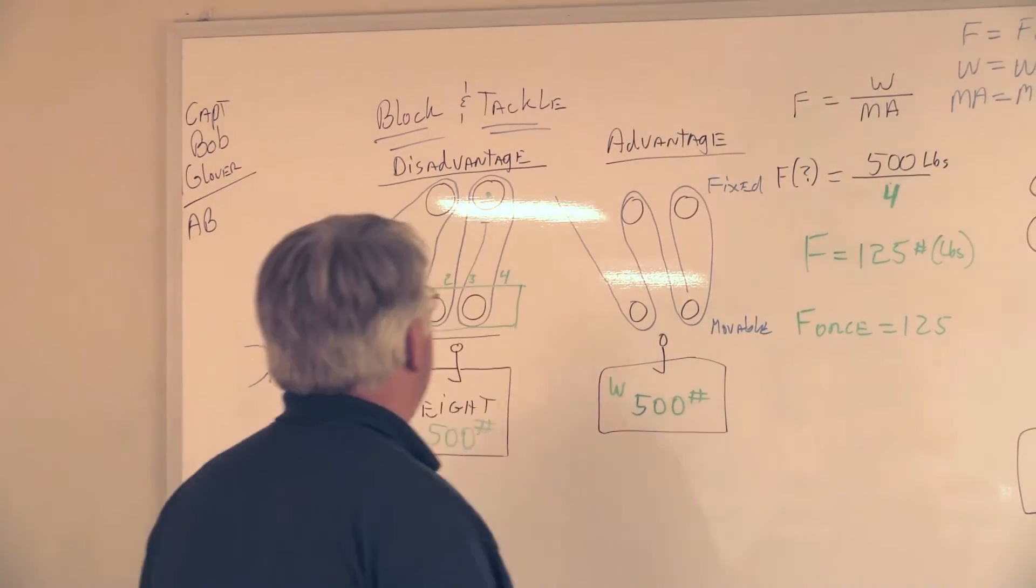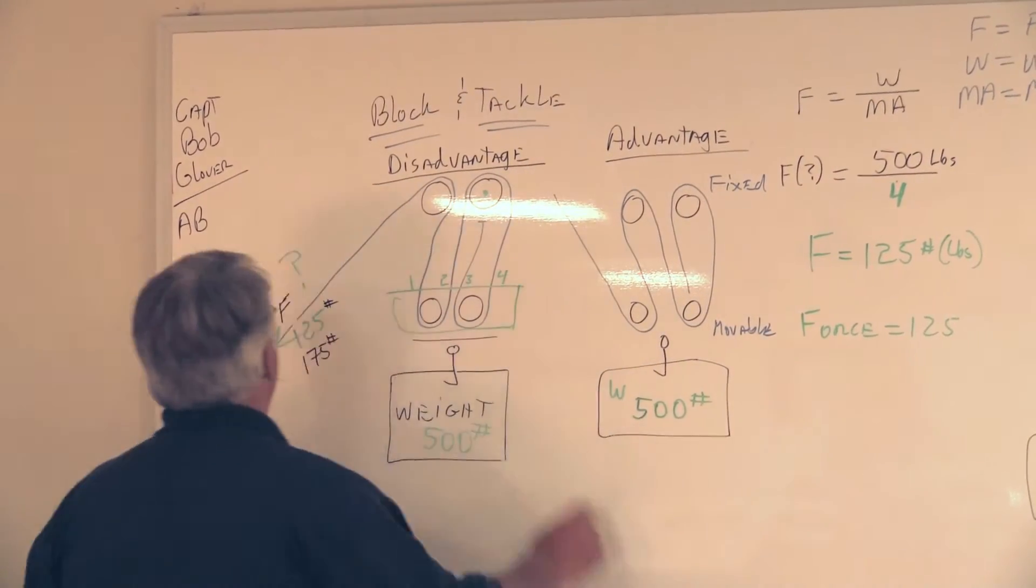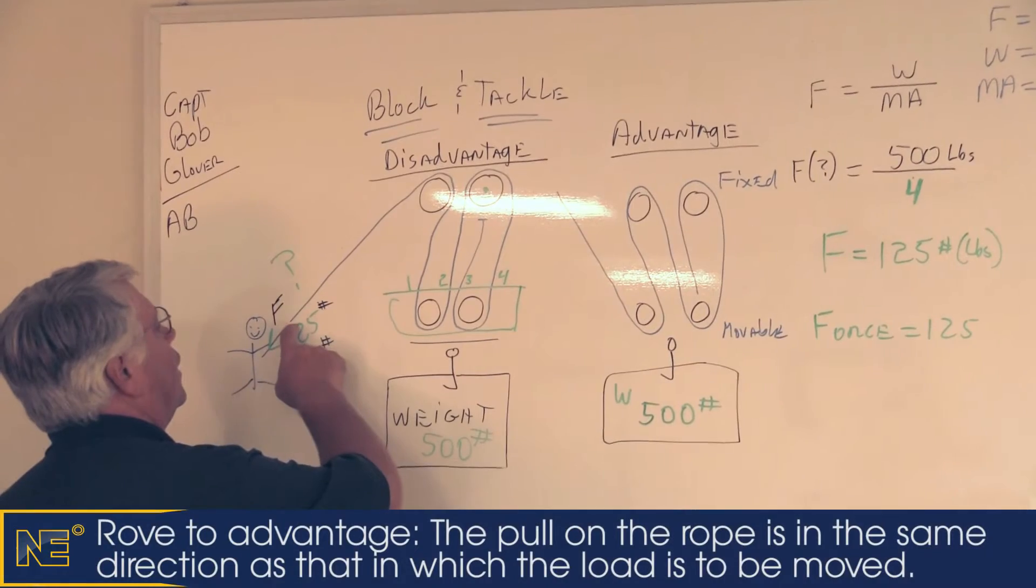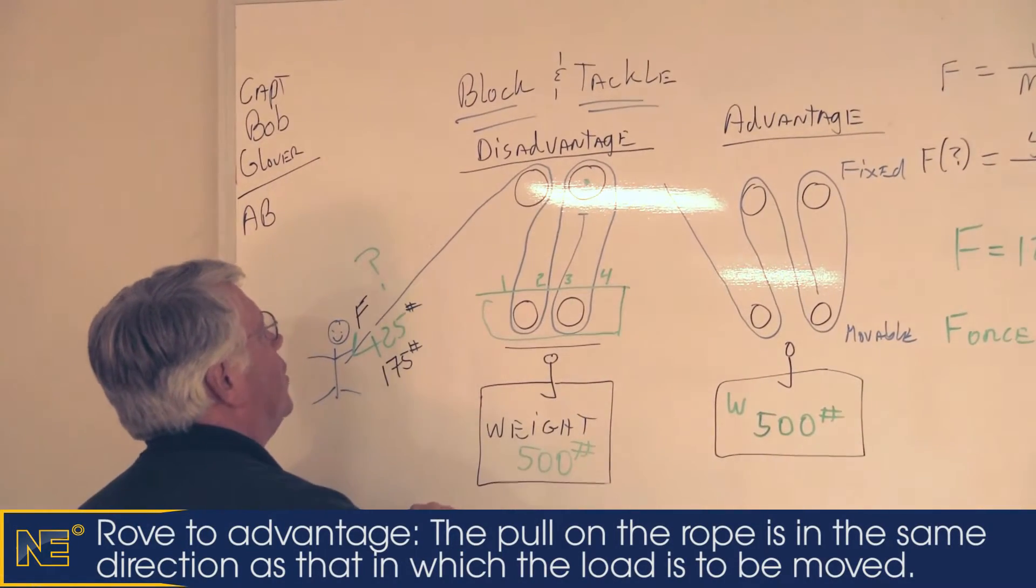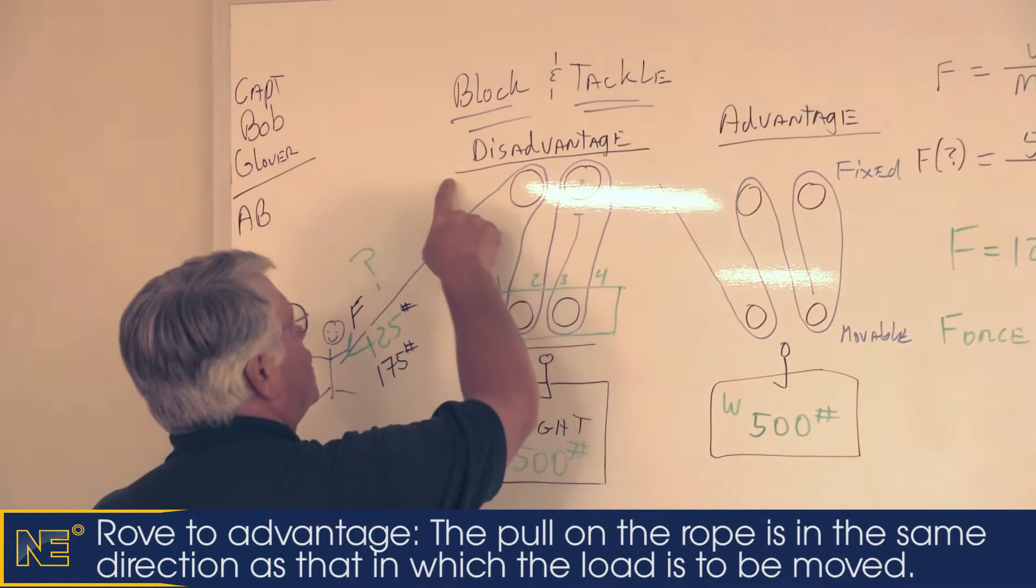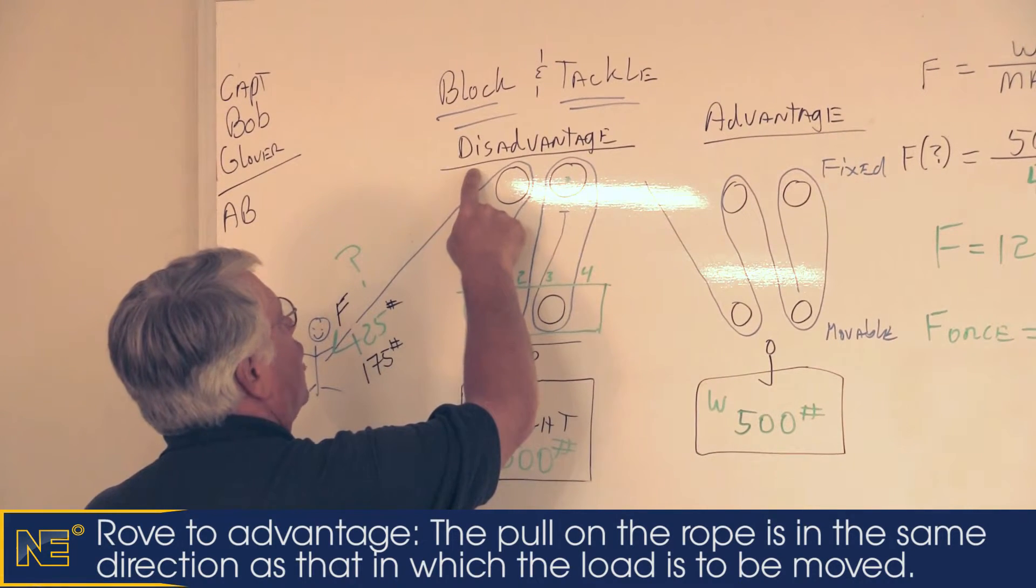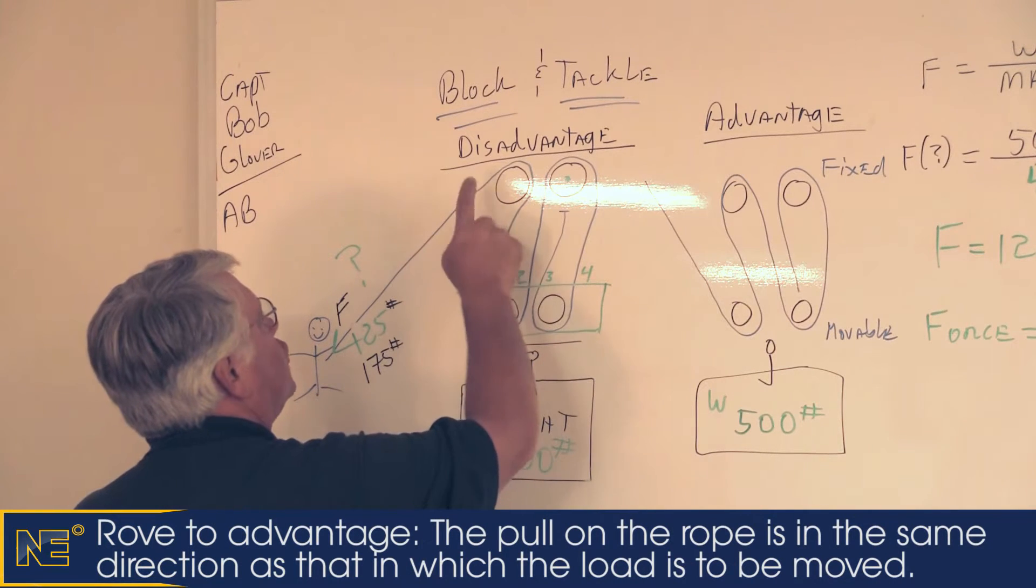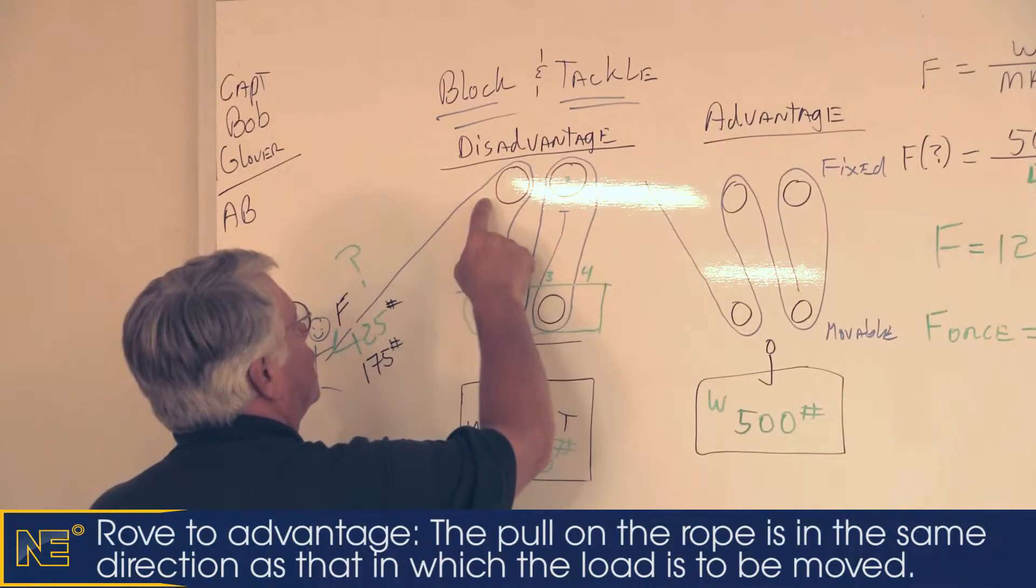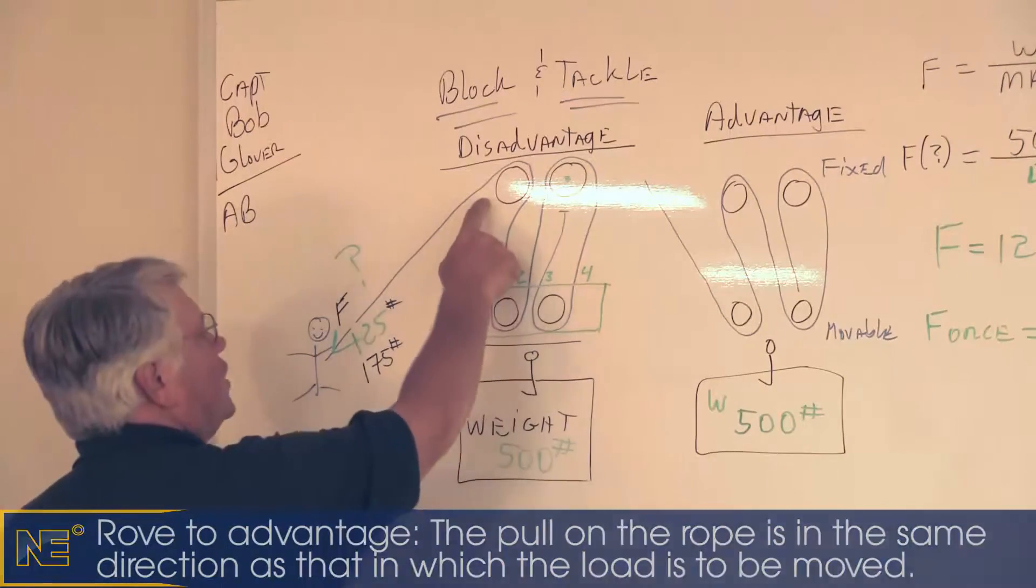Now what does that mean? It means that the pulling part that we're going to haul on, as you can see in this original setup that I put a couple of minutes ago, is actually roved to what we call disadvantage. In other words, the hauling part goes to the fixed block first. That's the one that's tied to the overhead.